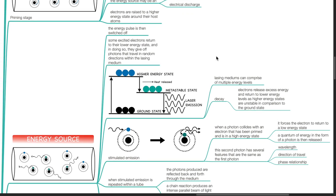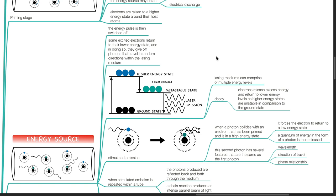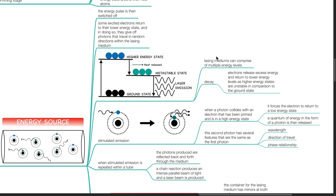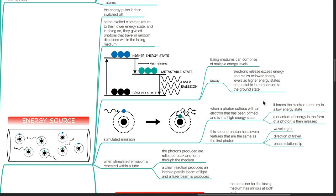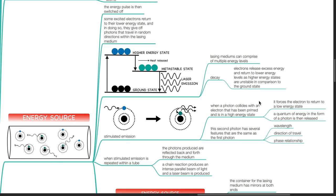Some excited electrons return to their lower energy state and in doing so they give off photons that travel in random directions within the lasing medium. Lasing mediums can comprise of multiple energy levels. Decay occurs when electrons release excess energy and return to lower energy levels, as higher energy states are unstable in comparison to the ground state.